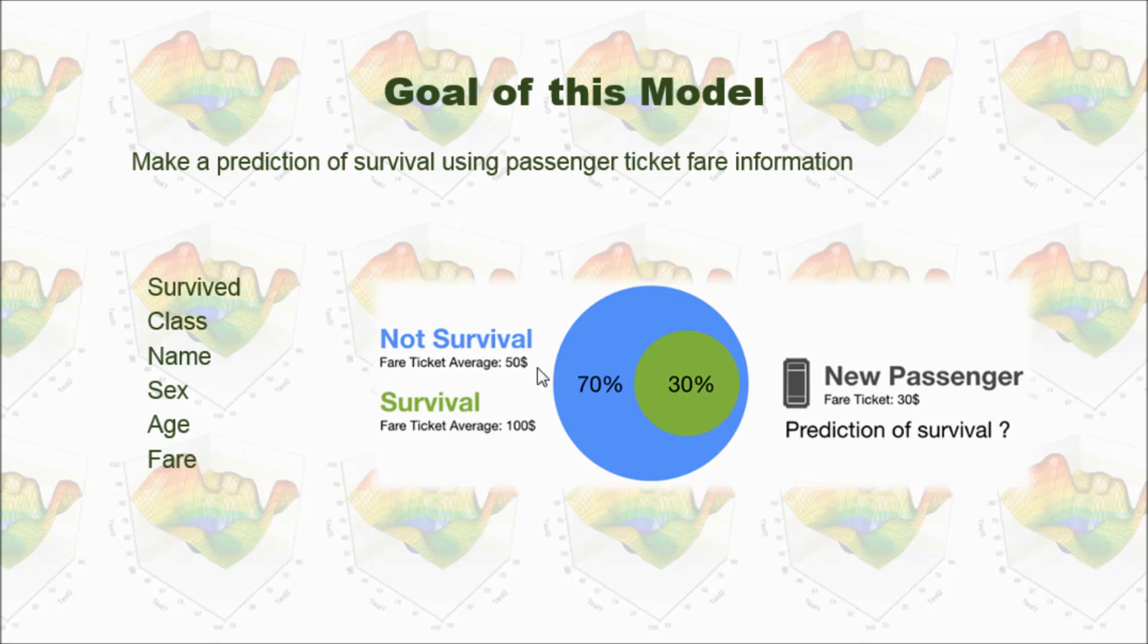With this information, we probably say, okay, because this ticket price is pretty low, probably this passenger will not survive. But how to make a model to predict if the passenger will survive or not?